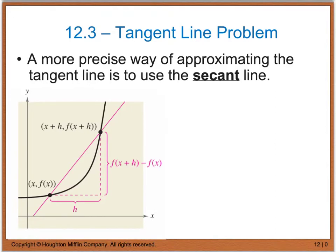A more precise way for approximating a tangent line is to use what we call the secant line. From geometry, your secant line is the line that goes through the point of tangency and hits a second point on the graph. The point (x, f(x)) is our point of tangency, and the point (x + h, f(x + h)) is our second point on the graph. We want to calculate the slope of our secant line.